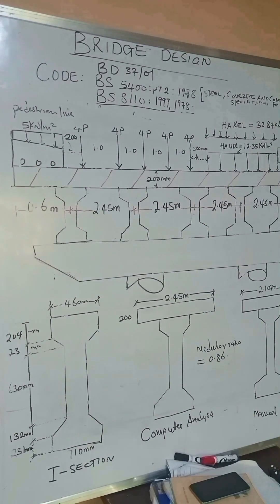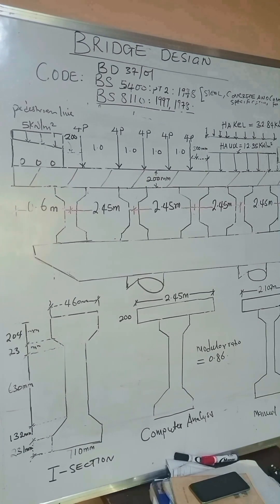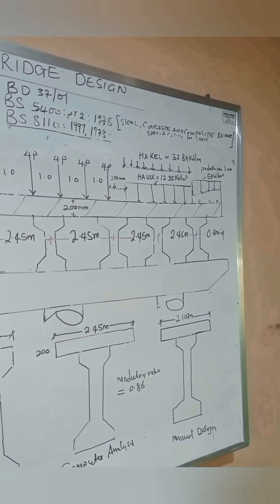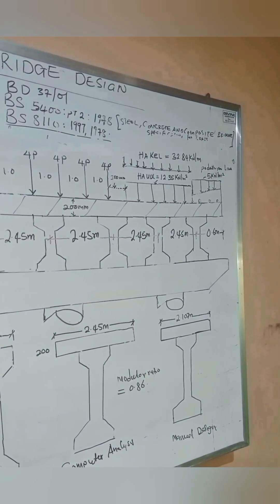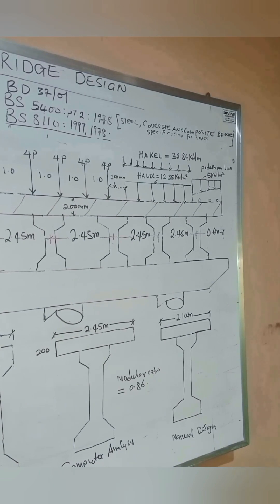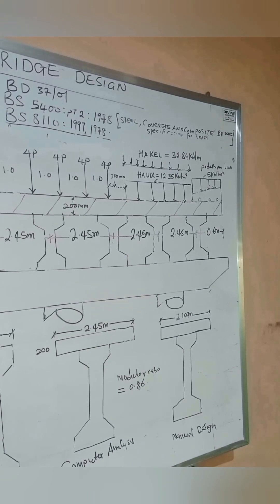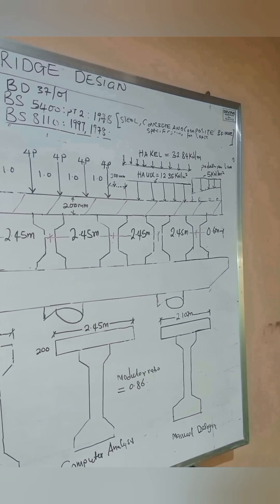When we look at the board, we can see the sections have been cut. We have the I-sections and the composite section for computer analysis — in the case where we intend to design with a computer using grillage — and also the section for manual design. The in-situ slab has been transformed using a modular ratio of 0.86 to transform it to the precast section.